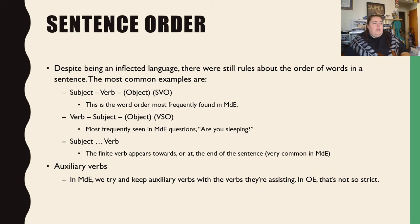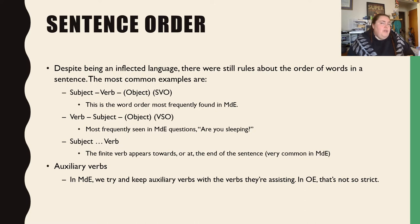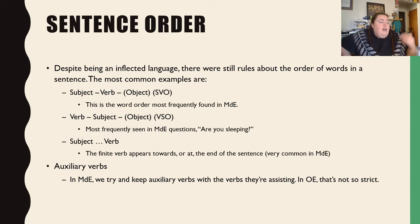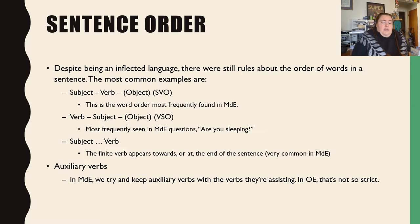Sentence order: because it's an inflected language, you'll occasionally hear people argue that you don't need to worry about sentence order at all — but this isn't really the case. It needs to be subject-verb-object most typically, or verb-subject-object. In modern English you hear that a lot as a question: 'Are you sleeping?' You can also split the verb to the end, like in German — 'Ich habe den Film gesehen' — the finite verb appears at the end. Auxiliary verbs: in modern English we try to keep the verb and auxiliary together, but in Old English you don't have to if you don't feel like it. 'I am to the store going' is totally fine in Old English — in modern English you sound like you forgot what you were saying.